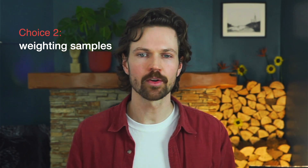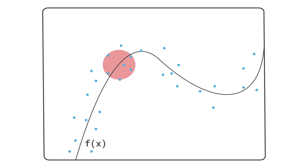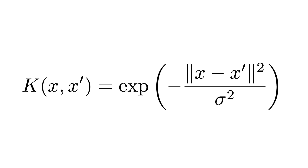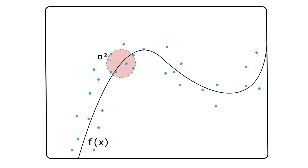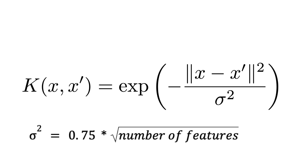The above process will generate samples across the entire feature space, yet we are only interested in how the model behaves around an instance. This is why in step three we need to weight the samples based on their distance from that instance. To do this, LIME uses the Gaussian kernel given in this equation. X is the instance being explained and X' is the sample we want to weight. We take the Euclidean distance of the normalized feature values; for categorical features, the one-hot encodings are used to calculate the distance. Theta squared is known as the kernel width — it controls how quickly the weights assigned to the perturbed samples decrease with increasing distance from the instance being explained. By default, the kernel width is set to 0.75 times the square root of the number of features used to train the surrogate model.